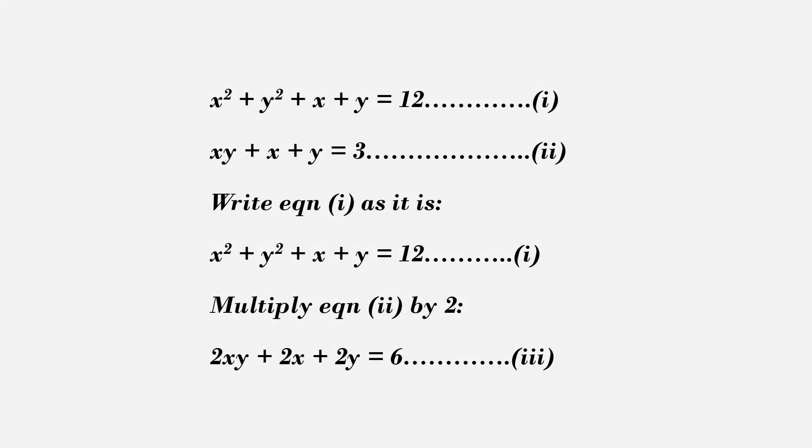Write the first equation as it is. x squared plus y squared plus x plus y equal to 12. Multiplying the second equation by 2, we get 2xy plus 2x plus 2y equal to 6. Let us refer to this as equation 3.